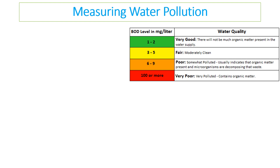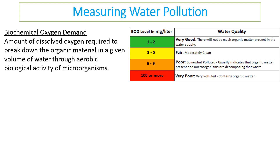We can measure water pollution in one of two ways. The first is using biochemical oxygen demand (BOD), which accurately measures the amount of dissolved oxygen required to break down the organic matter in a given volume of water. If water is polluted it may have a lot of organic matter, and microbes will use oxygen to break it down. Really polluted water requires a lot of oxygen; if less oxygen is needed, the water is clean.